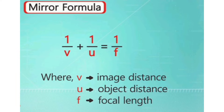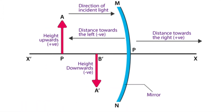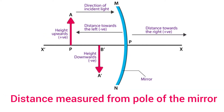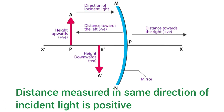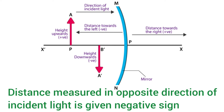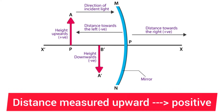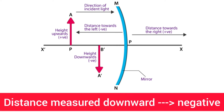If you need to use this formula in a word problem, you have to use the new Cartesian sign convention for spherical mirrors. While applying the Cartesian sign, we have to remember the following things: all distances are measured from the pole of the mirror. Distances measured in the same direction as that of the incident light are taken as positive. Distances measured against the direction of incident light are negative. Distances measured upward and perpendicular to the principal axis are positive, and distances measured downward from the principal axis are negative.